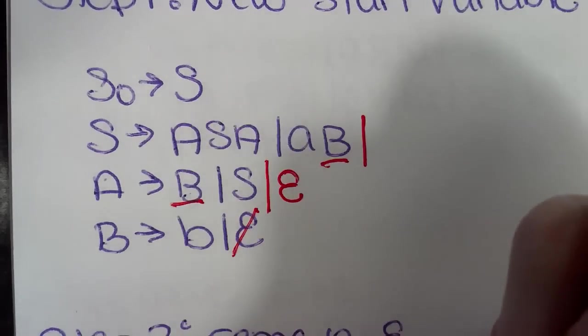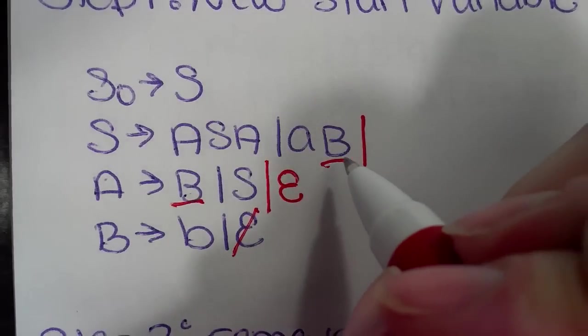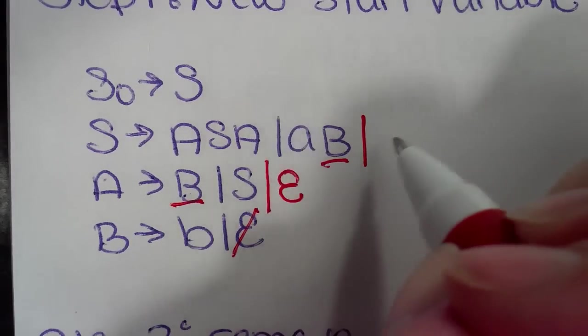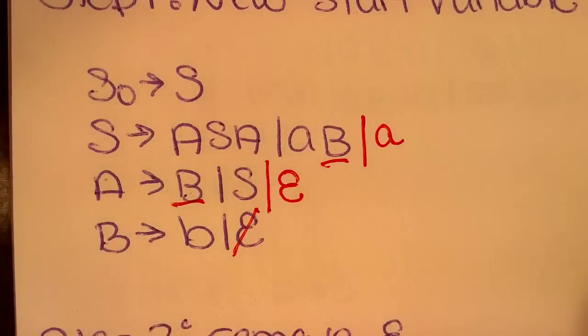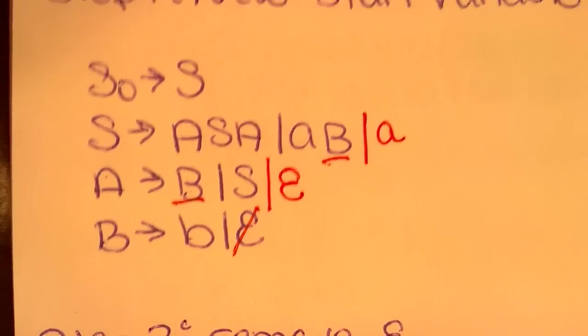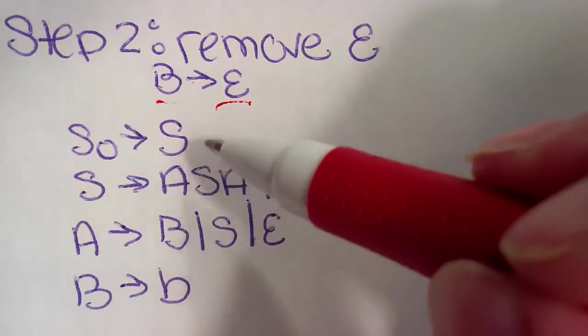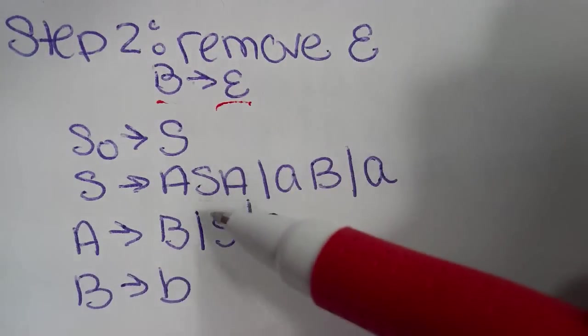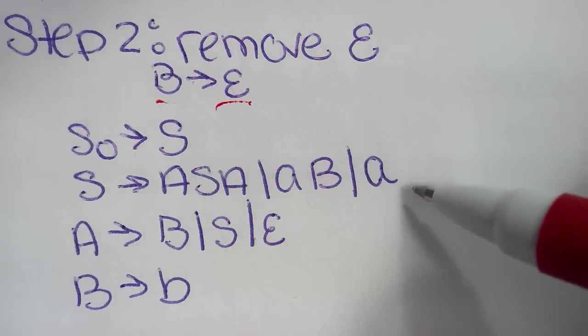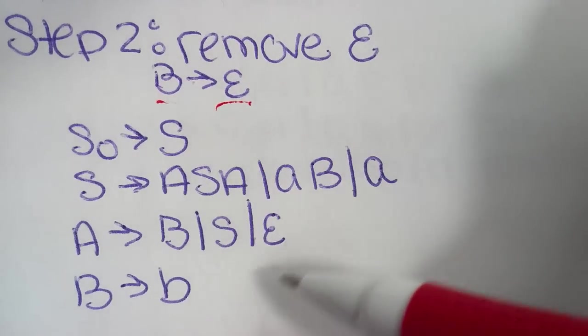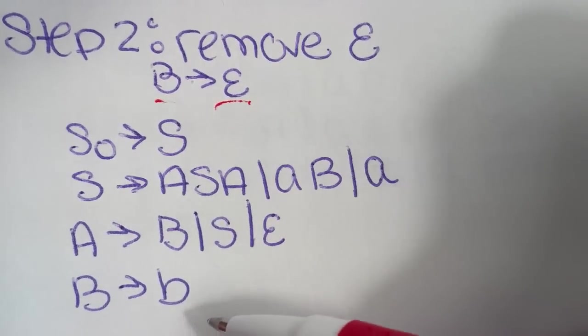And then we have the B here and if that were epsilon, then we just have the lowercase a terminal by itself. So our new equation will look like so. We have our S-naught points to S still. Our S points to ASA or AB or terminal A. We have our A points to B, S or epsilon. And we have B pointing to terminal B by itself.